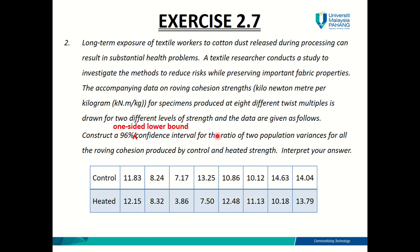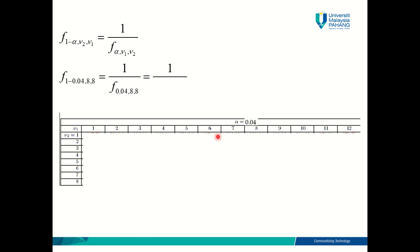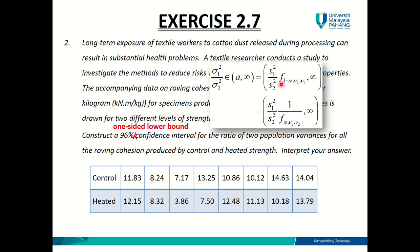Okay, so this is one-sided lower bound. So the formula would be this one. Alright, so this is the formula for one-sided lower bound for ratio of population variances. Okay, I wouldn't want to go through the whole process of finding the confidence interval with you in this video. But I just want to show you how you can find the critical value for this lower bound. Alright, let's just focus on the critical value here.